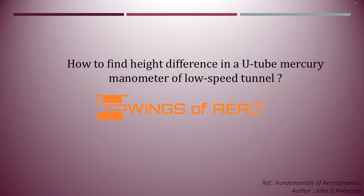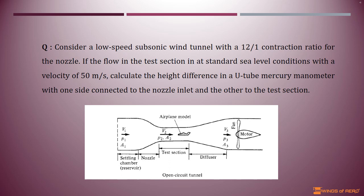Consider a low-speed subsonic wind tunnel with a 12 to 1 contraction ratio for the nozzle. If the flow in the test section is at standard sea level conditions with a velocity of 50 meters per second, calculate the height difference in a U-tube mercury manometer with one side connected to the nozzle inlet and the other to the test section.